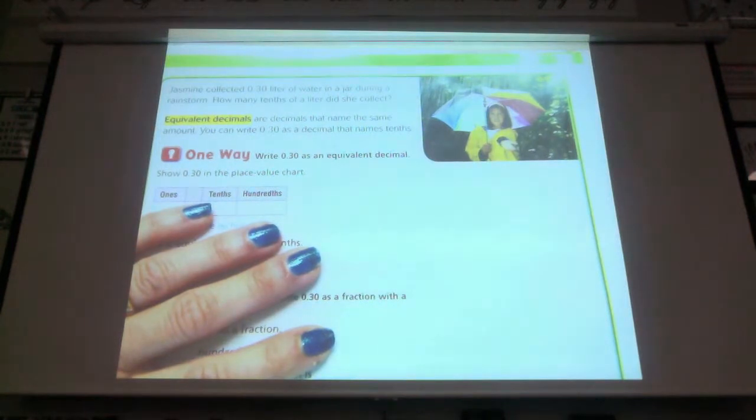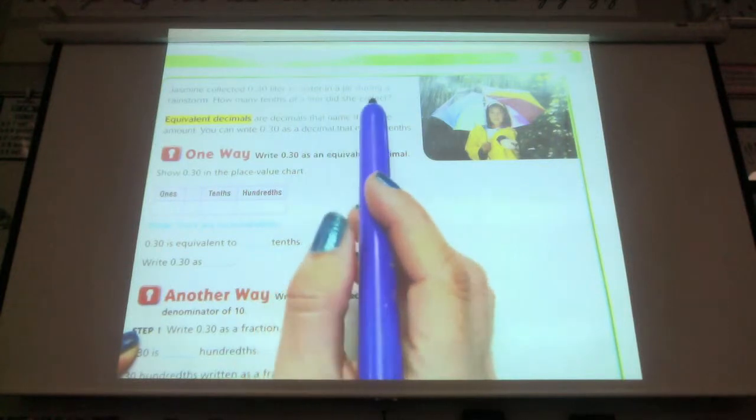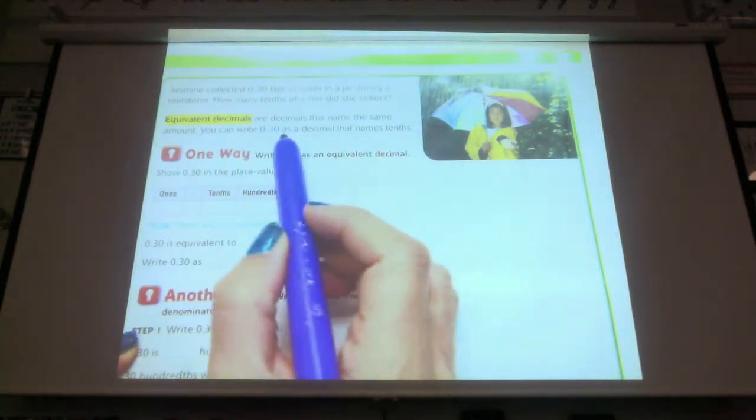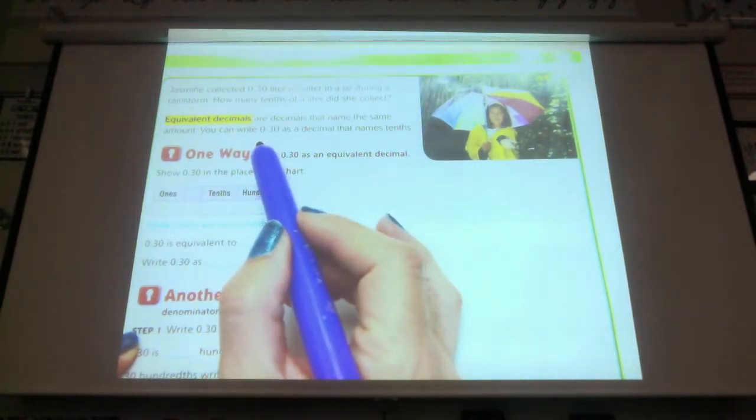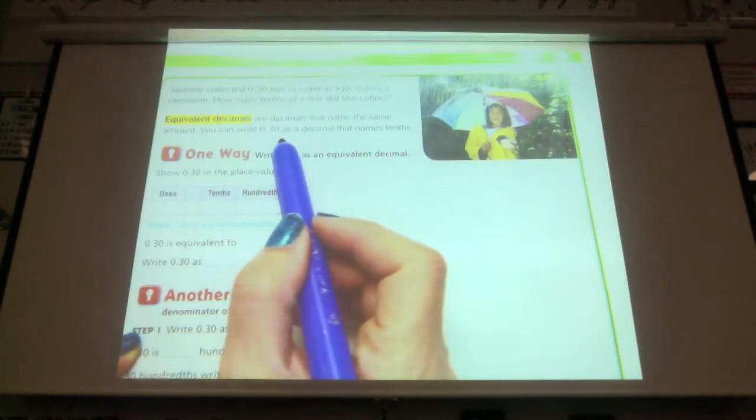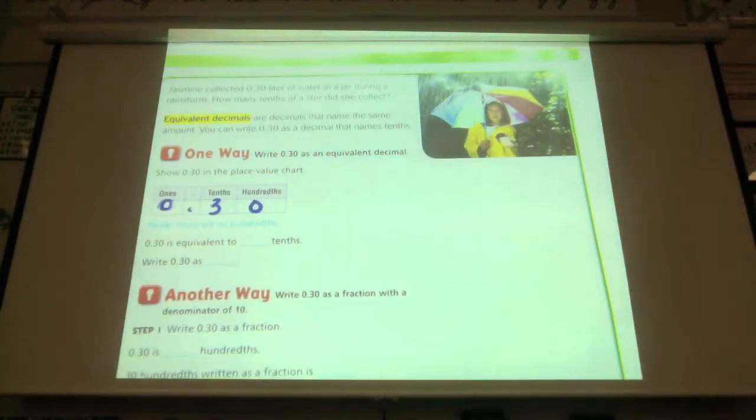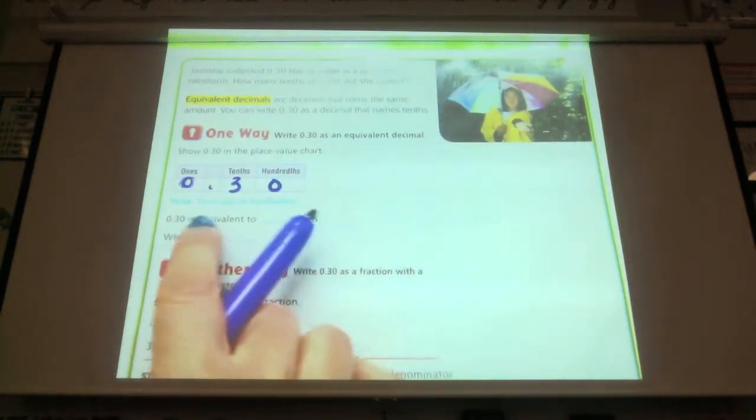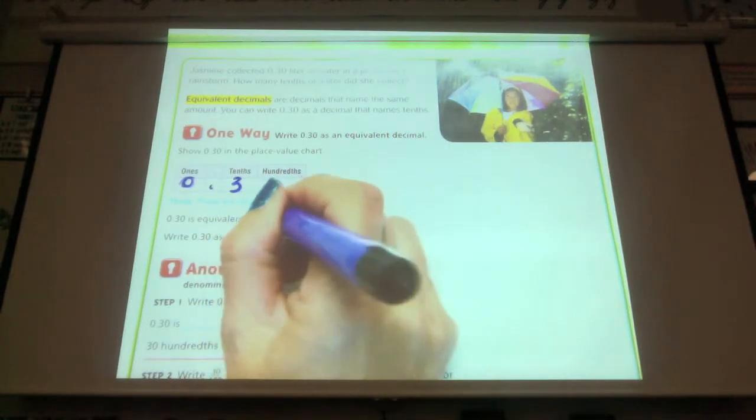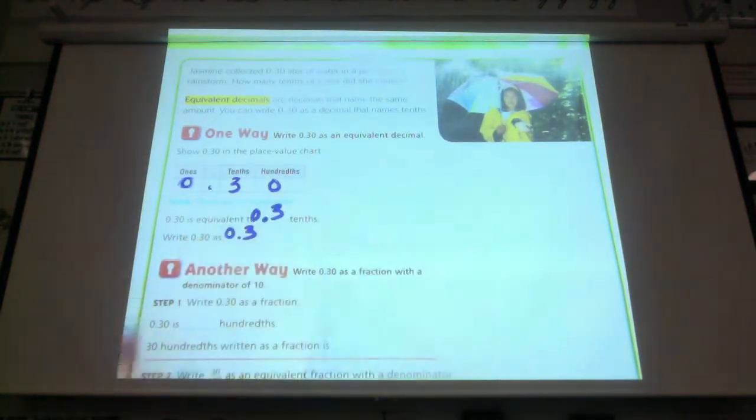"Jasmine collected 0.30 liters. How would I say 0.3? Three tenths. Very good. Jasmine collected three tenths a liter of water in a jar during a rainstorm. How many tenths of a liter did she collect? We just said it, didn't we? Equivalent decimals are decimals that name the same amount. You can write 0.30 as a decimal that names just tenths. In this case, it looks like hundredths right now, because it goes to the hundredths place. And because there's zero hundredths and nothing else after it, we can just look at this and call it three tenths. So you can write 0.30 as 0.3. It's the same thing."